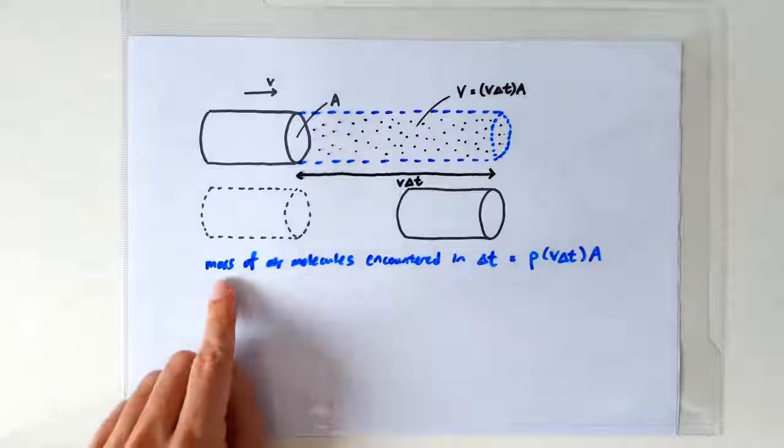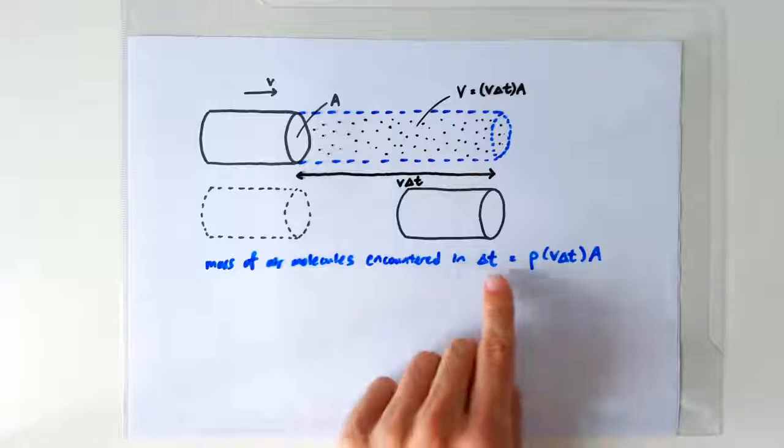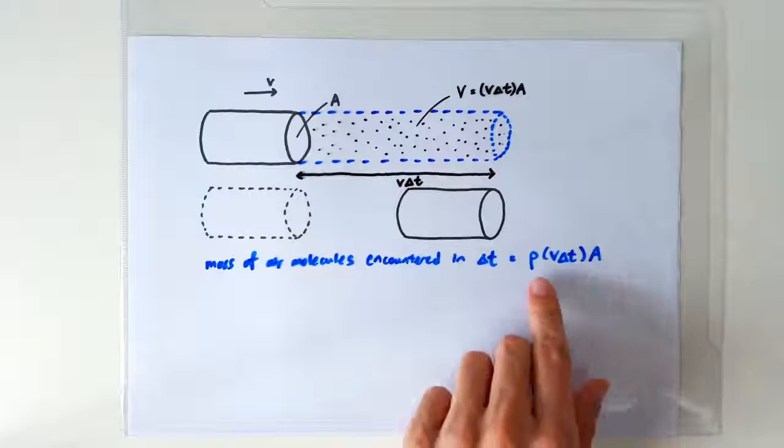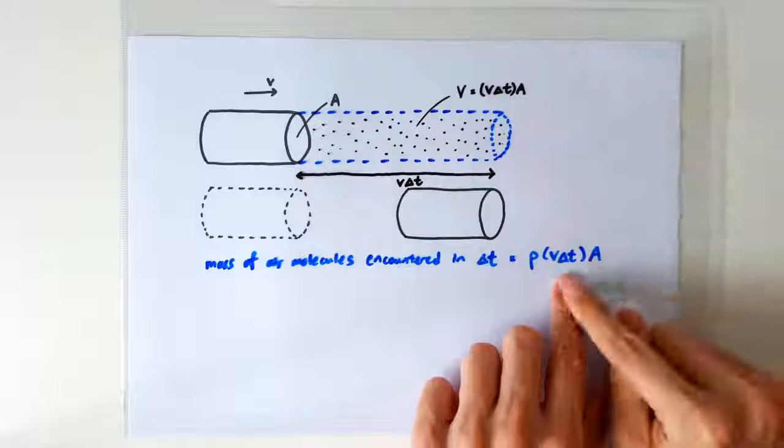So in terms of mass, the amount of air molecules encountered in delta t can be written as a density times volume. So rho times the volume V delta t A.